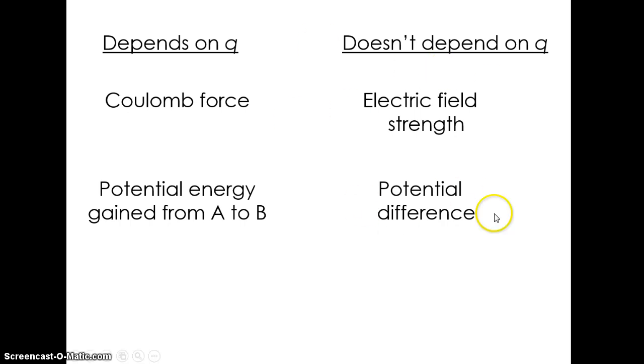So these quantities, electric field strength and potential difference, they give us a way to talk about force and energy without requiring specific examples of charges. You don't have to say, okay, imagine there's a one coulomb charge going from here to here. You can just talk about the potential difference instead. It frees us up from having to discuss specific examples of charge values. And as we're about to see, that becomes really useful for things like circuits.